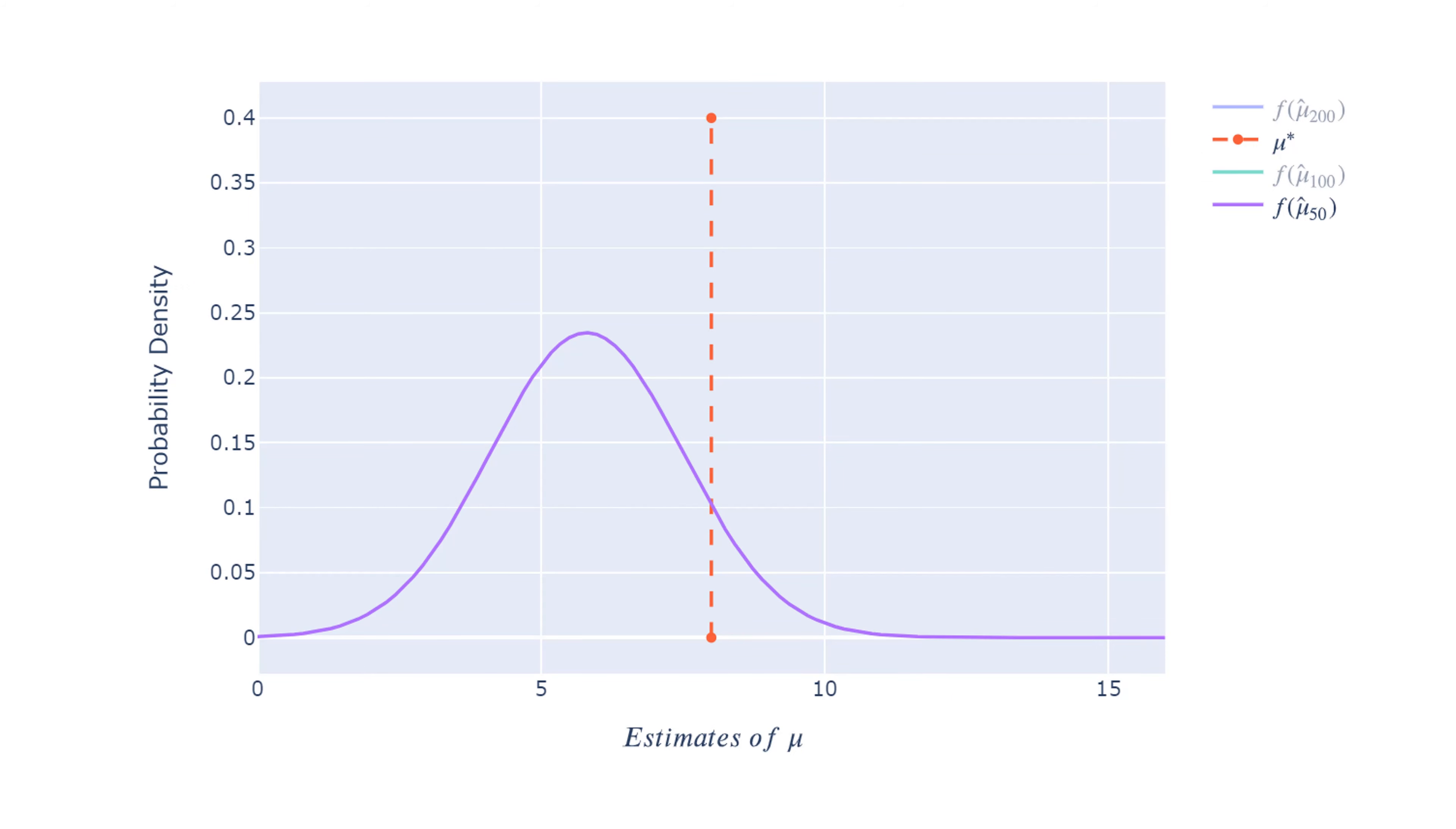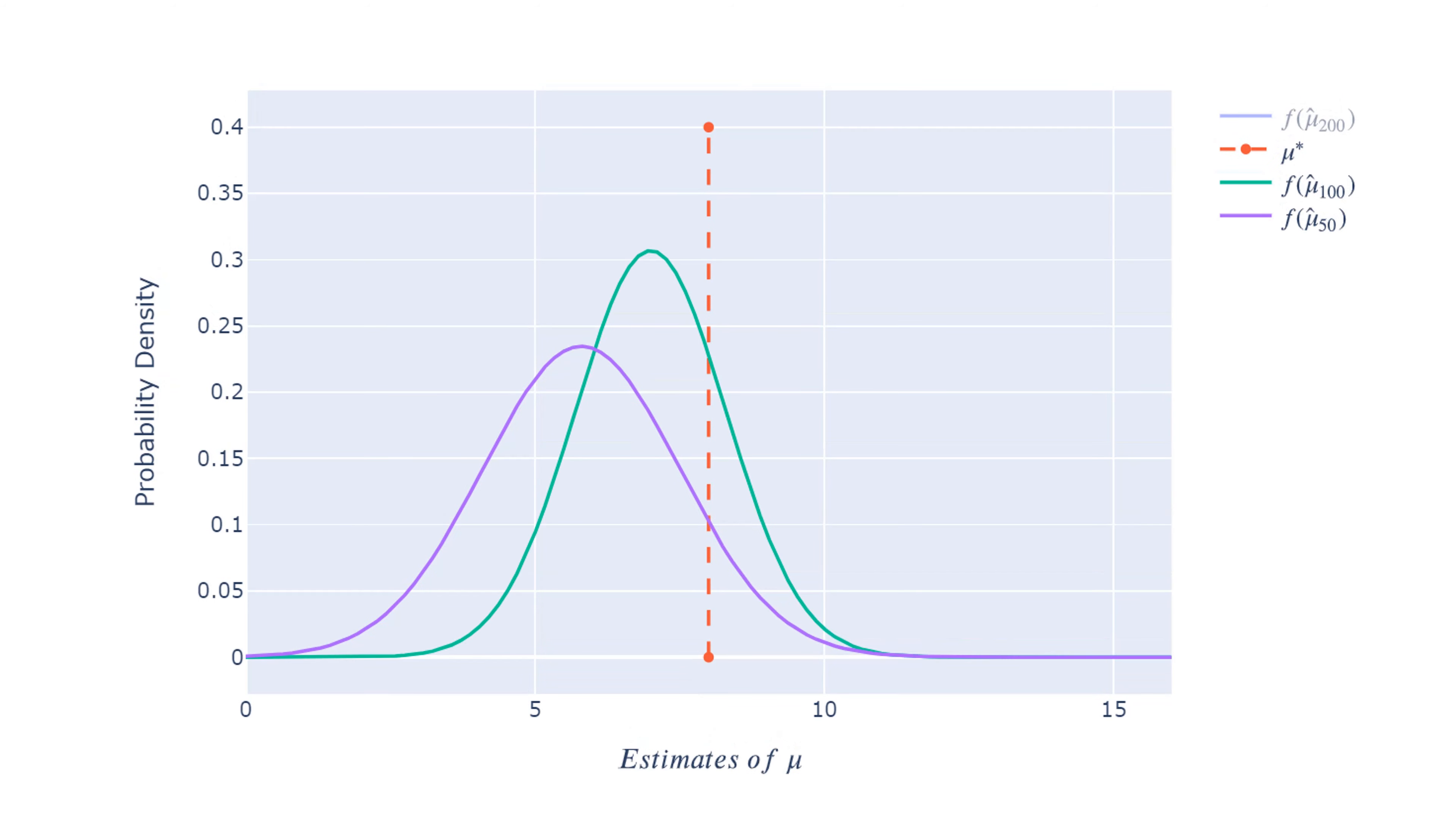Suppose we have this biased estimator represented by this purple curve. We use a sample size of 50 observations to construct this estimator. Now we have this green estimator constructed based on a sample size of 100 observations.